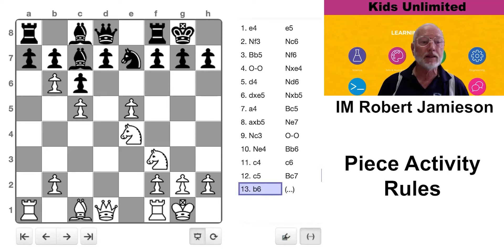I can play b6, driving his bishop further back. Because the pawn is pinned, he can't take it because he'd lose his rook. So the bishop goes further back.